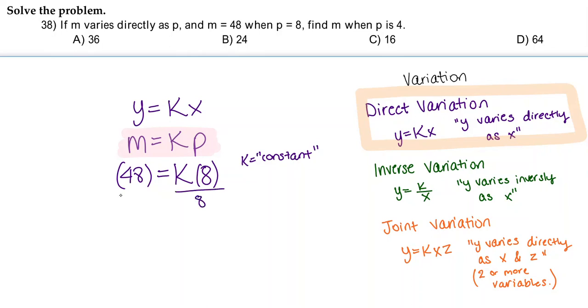So here to get k by itself, we're going to divide by 8, and k is going to equal 6. So our k is 6.